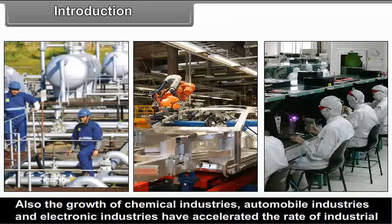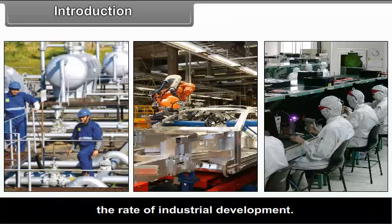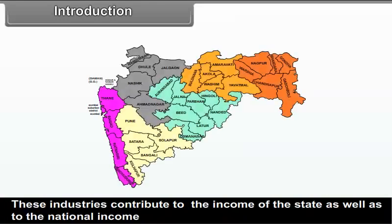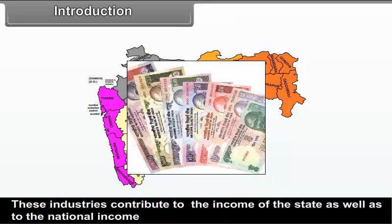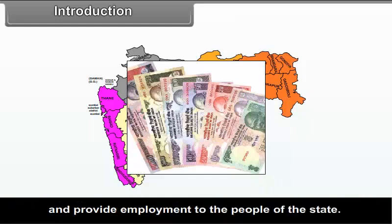In Maharashtra, there is development of sugar and cotton textile industries which are based on traditional agricultural produce. The growth of chemical industries, automobile industries and electronic industries have accelerated the rate of industrial development. These industries contribute to the income of the state as well as to the national income and provide employment to the people of the state.